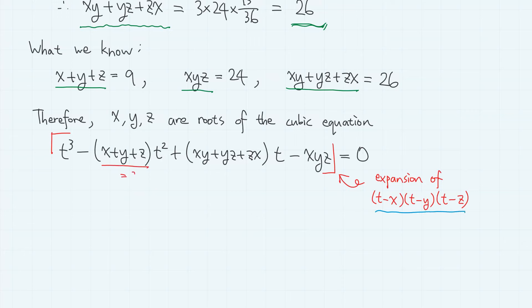So, this is 9, and this is 26, and this is 24. So, we have t cubed minus 9t squared plus 26t minus 24 equals 0.